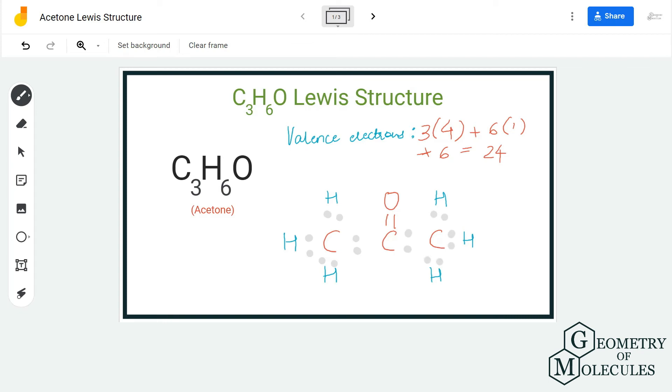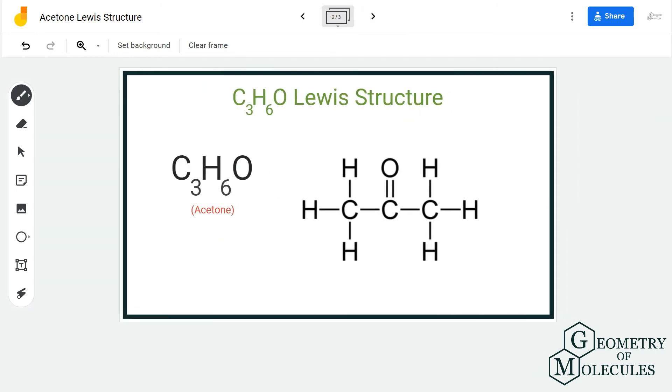As we are just left with four more valence electrons in this compound, these four electrons will be arranged around the oxygen atom. Doing that, you will see that each atom in this molecule has a complete octet.